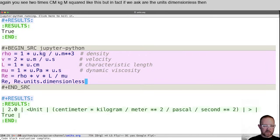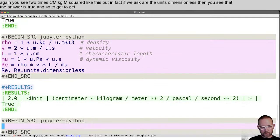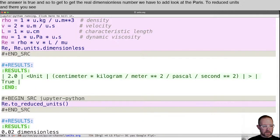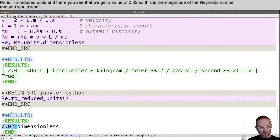And so to get to get the real dimensionless number, we have to look at the RE.to reduced units. And there you see that we get a value of 0.02. So this is the magnitude of the Reynolds number that you would want to use in a calculation. Probably not this one.